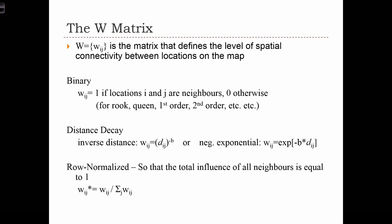In the binary case, W sub IJ will equal 1 if locations I and J are neighbors. Otherwise, WIJ will equal 0. So we can apply a binary W matrix for different levels of contiguity.